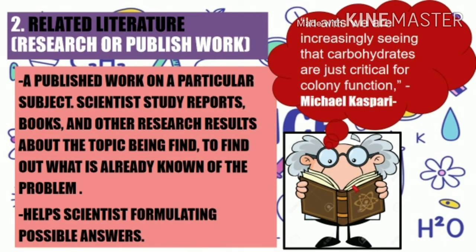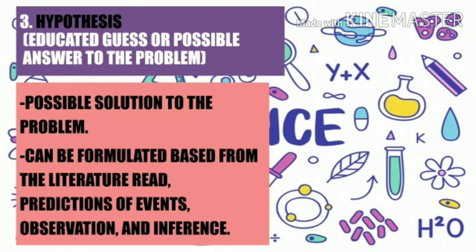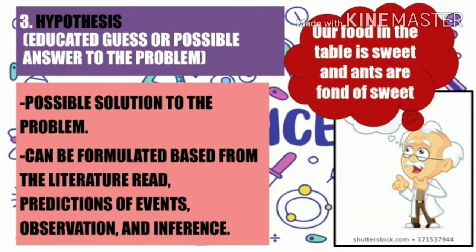Scientists also do background research to help them formulate possible answers to the problem. An example of published work is from Michael Kasperi: 'In ants, we are increasingly seeing that carbohydrates are just critical for colony function.' Next is the hypothesis — an educated guess or possible answer to the problem. Hypothesis is based on literature read, prediction of events, observation, and inference. Our example hypothesis is that the food on the table is sweet and ants are fond of sweets. Sugars are short-chain carbohydrates found in food.